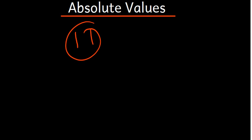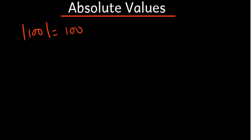Let's talk about absolute values. Whenever we're talking about absolute values, we're talking about the modulus. The absolute value of 100 is just 100, and the absolute value of negative 100 is positive 100. In short, in modulus, everything that comes out is going to be positive, even if you have a negative inside.